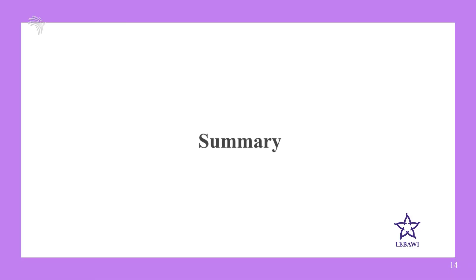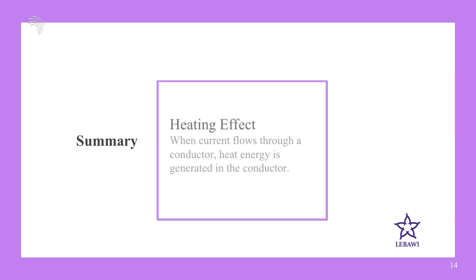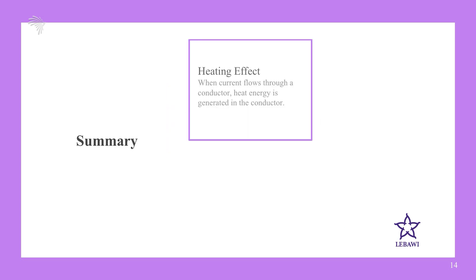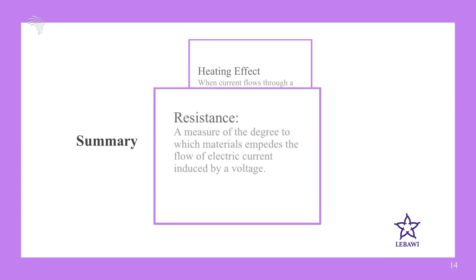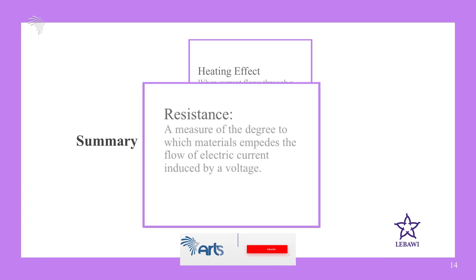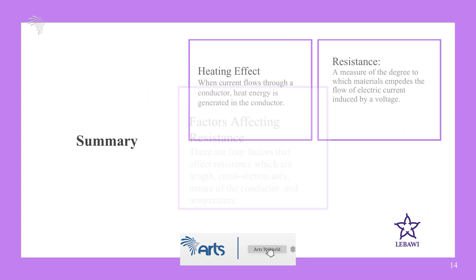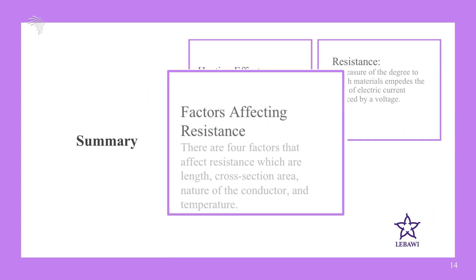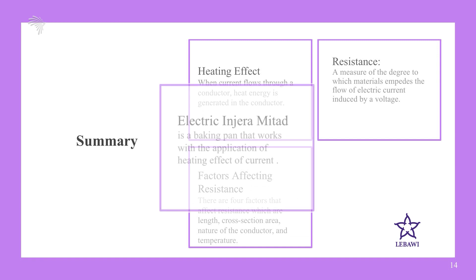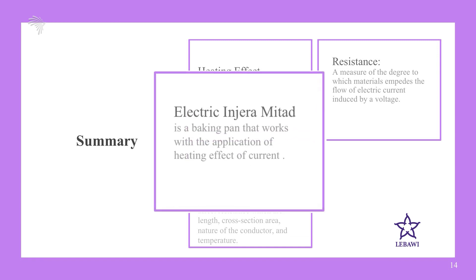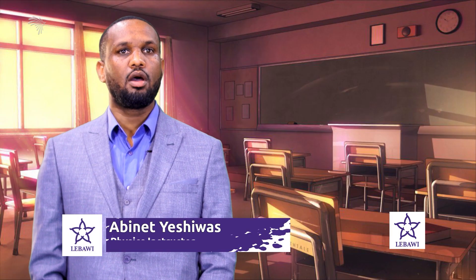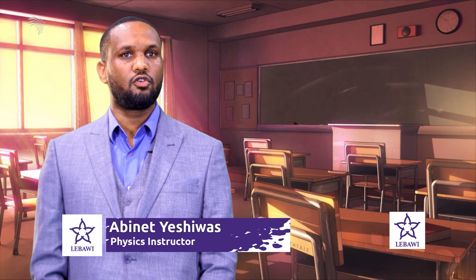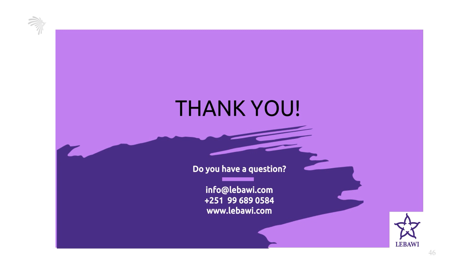Let's summarize what we have learned. In today's presentation, we have seen the heating effect of electric current. We defined resistance as the measure of the degree to which materials impede the flow of electric current induced by voltage. We also saw the factors that affect the resistance of a conductor. Finally, we saw how electric mitads use power to bake injera. I hope you have enjoyed our presentation. Thank you for being with us. Goodbye, everyone.